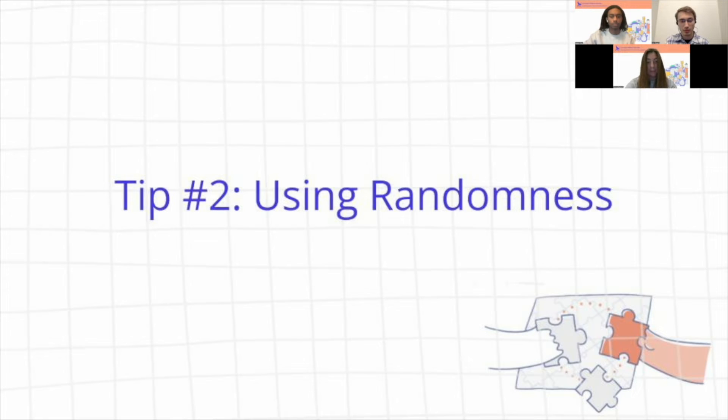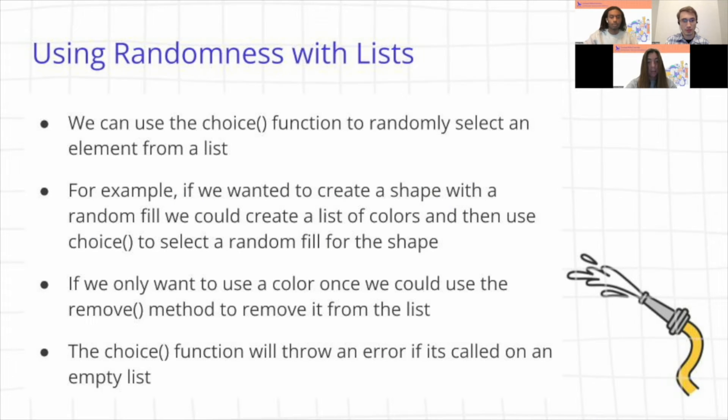Okay, so our next tip is going to deal with using randomness in our lists. So we can use the choice method in order to randomly select any element from a list. So this function will take in a list as the parameter, and then it will return a random element from the list. So for example, if we had a shape and we wanted to randomly choose a color to make the fill of this shape, then we would use the choice function to randomly select a color to fill the shape. And if we only wanted to choose a color once, then we can use the remove method to remove the color from the list once we've already used it. But we have to be careful for removing elements from a list because the choice method or choice function will throw an error if it's called on an empty list. So we have to check that the list is not empty before we call the choice method or choice function on it.